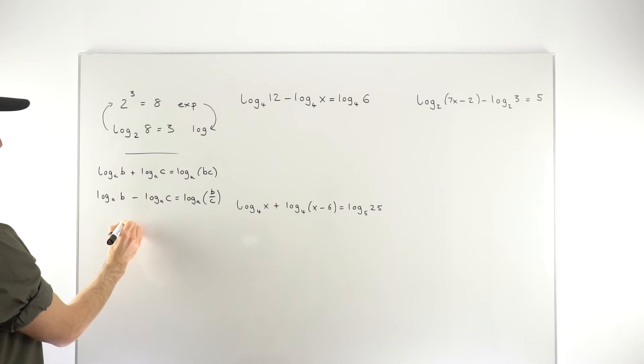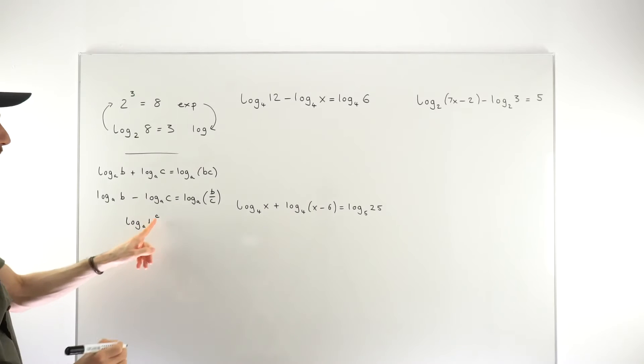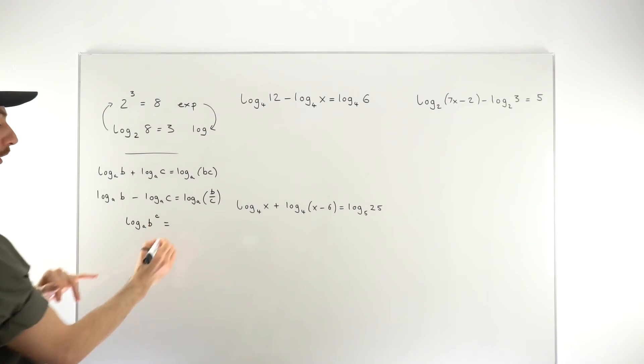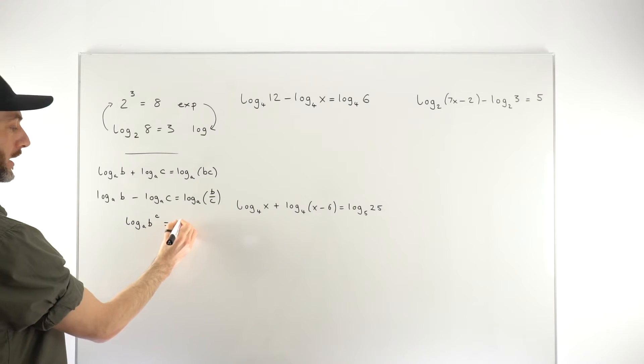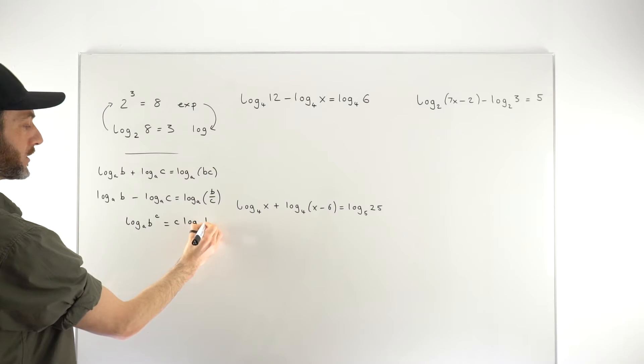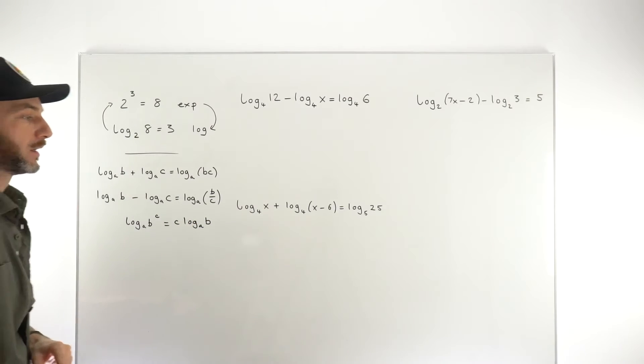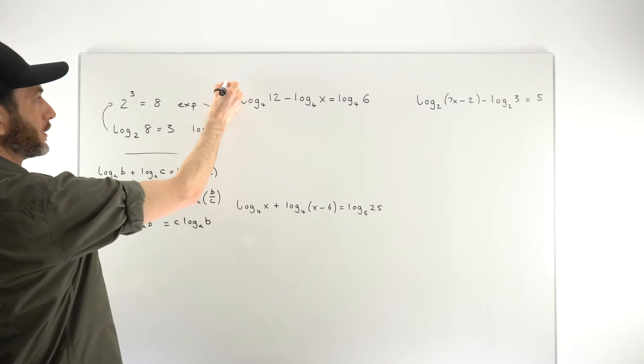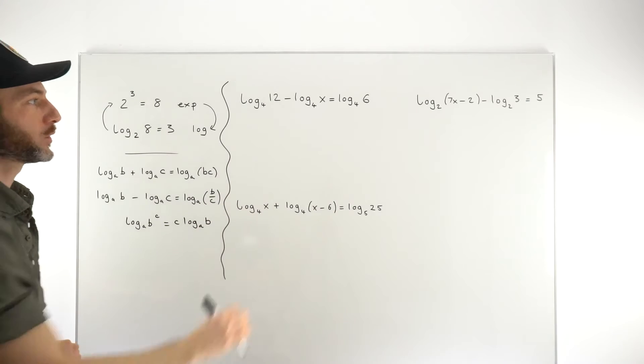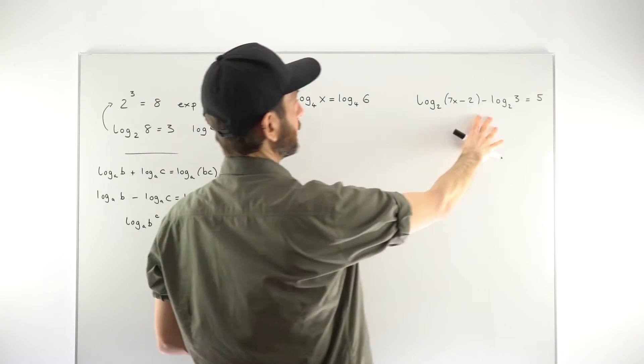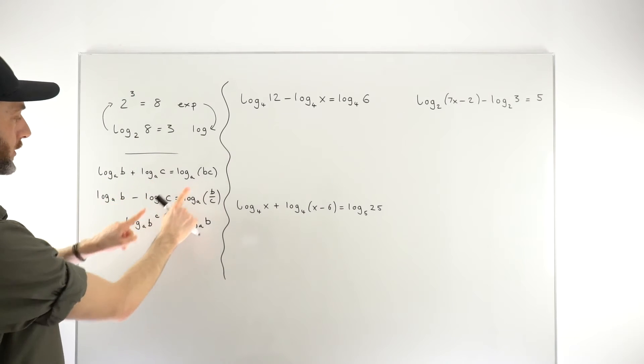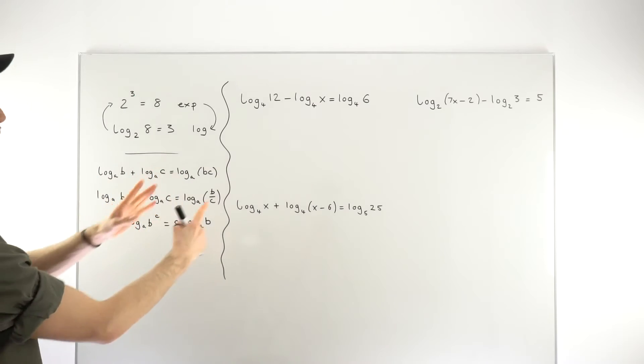There's a few other rules. The other one that will be applicable to us is log to base A of B to the power of C. So if you've got a power on the number that's in the log, you can bring that power in front and make it C times log to base A of B. So potentially, we're going to use all of these rules in solving our equation. Notice that they're all in similar but slightly different format. The main thing is the base numbers have got to stay the same to be able to even use the rule.